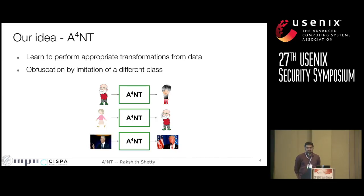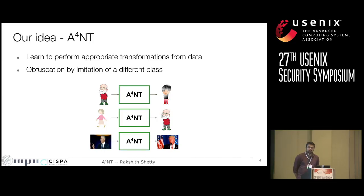It does this obfuscation using imitation. So basically, if you want to obfuscate age and you have classes like adult and teenager, you obfuscate by imitating the style of the other class. We demonstrate this on three different attributes, including age, gender, and identity.